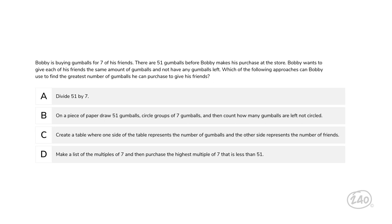If Bobby wants gumballs for each of his seven friends and none left over, we need to know the multiples of seven. And there are only 51 gumballs in the store, so our number has to be lower than that. So our best option is this one: make a list of the multiples of seven and then purchase the highest multiple of seven that is less than 51. Now let's look at an algebra question.